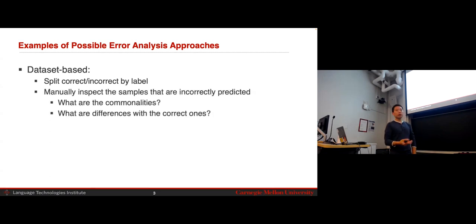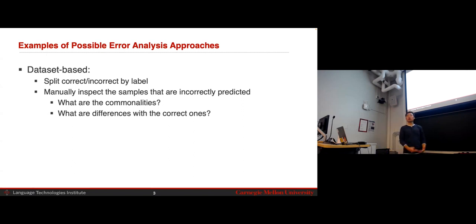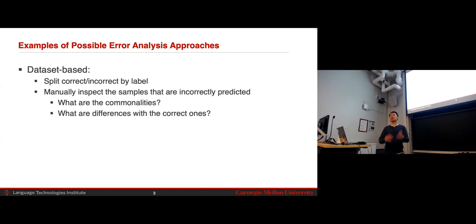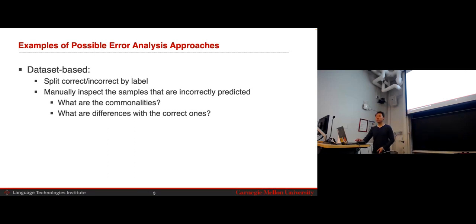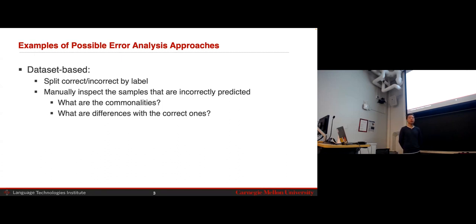Another general way is to manually inspect the model's incorrect predictions. You can rank the model outputs by the ones that got the most incorrect — not just incorrect, but very high confidence in getting it incorrect. See what those samples are. Ranking them helps because you don't want to go through all 25% of 10,000 incorrect data points. You can rank them, see what the most incorrect data points were, see whether there are commonalities, and what the main differences are with the ones the model got correct. That gives you insight, which you use to formulate a research hypothesis on where the model is struggling.